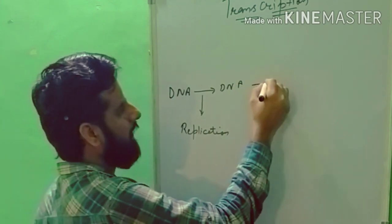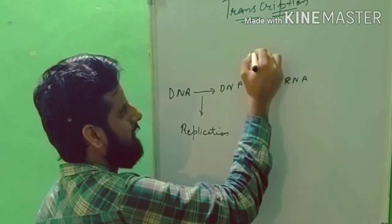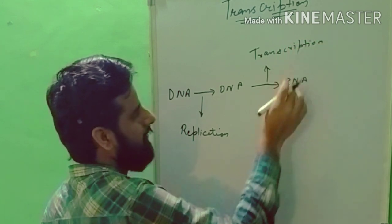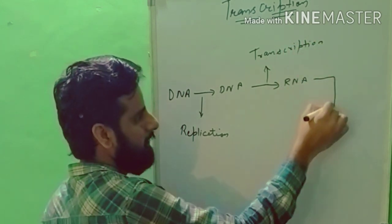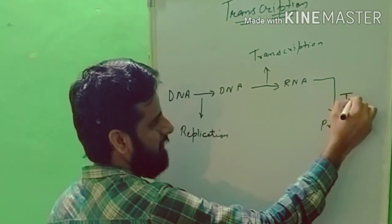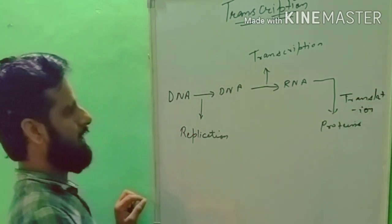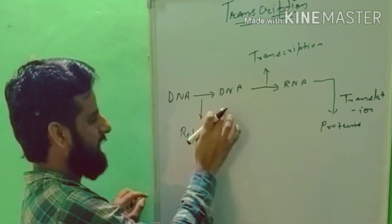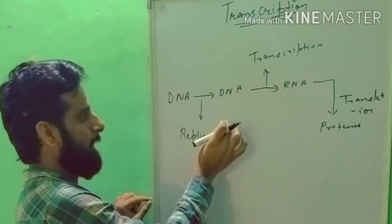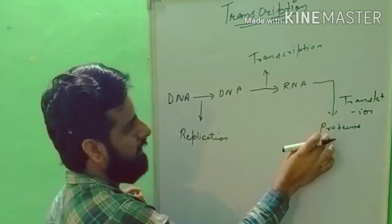The process of RNA formation from DNA is called transcription. And from this RNA, proteins are to be formed, and this process is called translation. So we have: DNA to DNA is replication, which we studied in the previous class; DNA to RNA is transcription; and RNA to protein is translation.